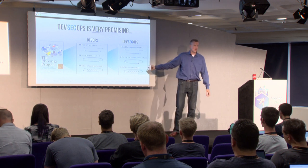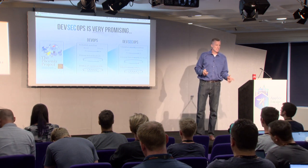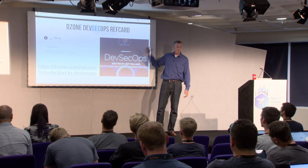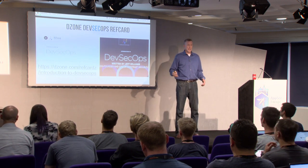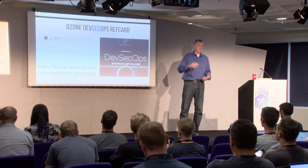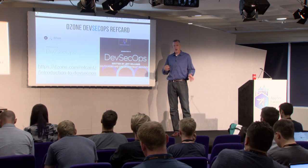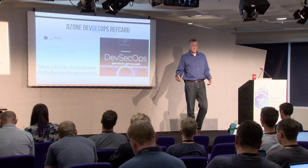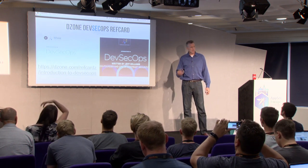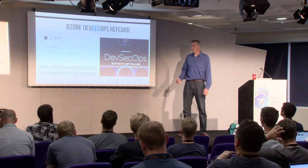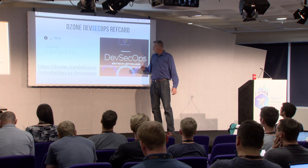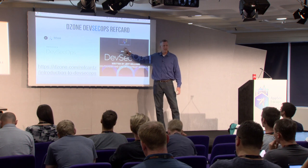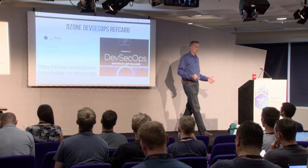Today we're going to focus on automation. I just published a ref card on DevSecOps for DZone — I strongly encourage you to look at it. As a side comment, I wish I could have published this at OWASP, but OWASP makes it really difficult for vendors to participate, and that's a challenge I'd like to see addressed. Today we're going to focus specifically on the automation piece of DevSecOps — we're going to build a DevSecOps pipeline using two technologies called IAST and RASP.